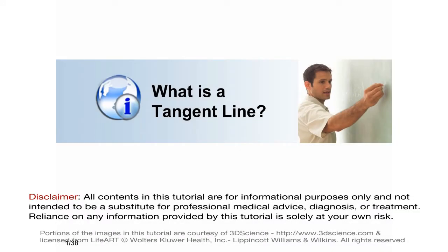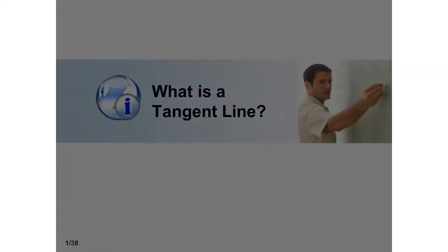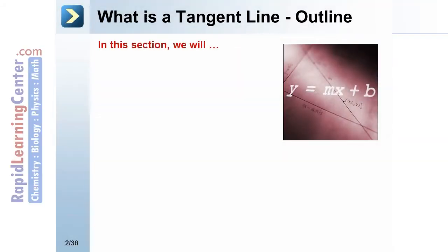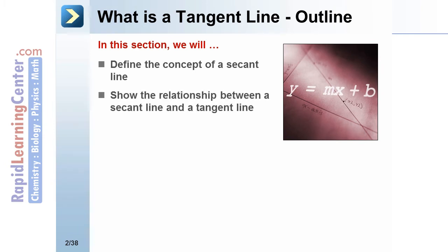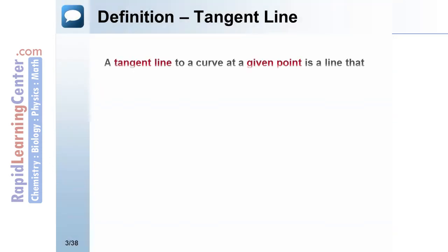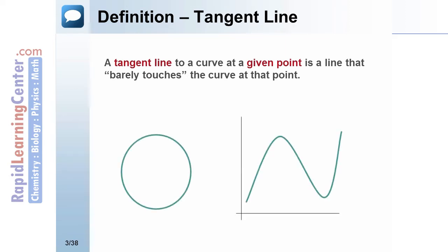So exactly what is a tangent line? In this section we will define the concept of a secant line, show the relationship between a secant line and a tangent line, and relate the tangent line to instantaneous rates of change. The definition of a tangent line is as follows: a tangent line to a curve at a given point is a line that barely touches the curve at that point.